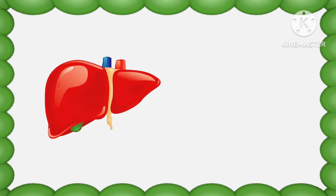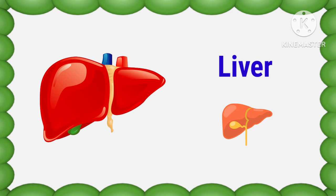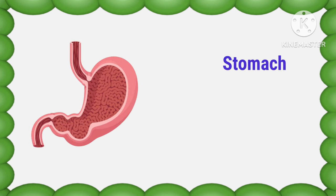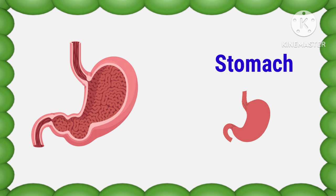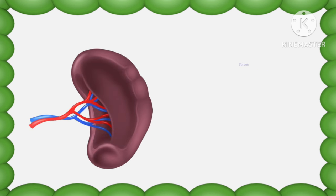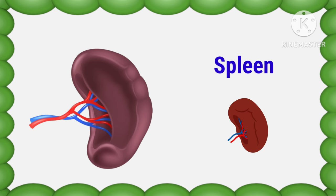Liver — L-I-V-E-R — liver. This is our liver. Stomach — S-T-O-M-A-C-H — stomach. This is our stomach. Spleen — S-P-L-E-E-N — spleen. This is our spleen.